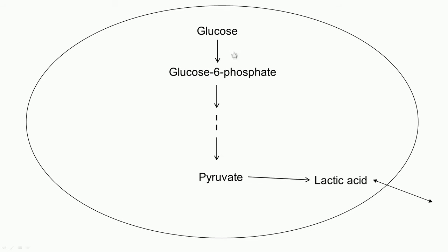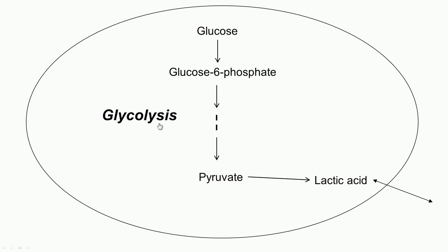Let us dig a little deeper. This is one of the thousands of sets of reactions that occur in the cell. It typically starts with glucose, and this particular set of reactions ends with pyruvate. Glucose gets converted to glucose-6-phosphate, gets converted to fructose-6-phosphate, and so on and so forth until it gets to pyruvate. Pyruvate gets converted to lactic acid, which gets out of the cell. This set of reactions — glucose to pyruvate — is called glycolysis, and each one is catalyzed by an enzyme. As a result, lactic acid gets formed, which causes acidification and curdling of milk.